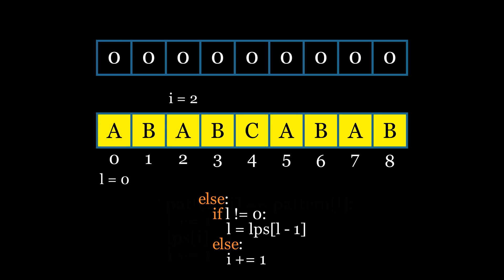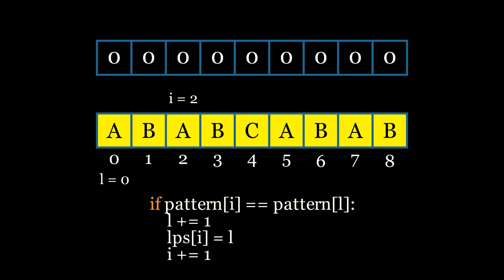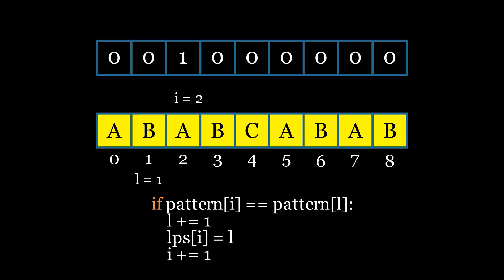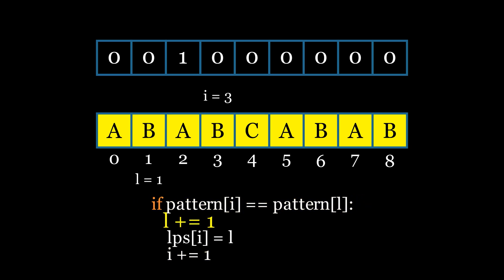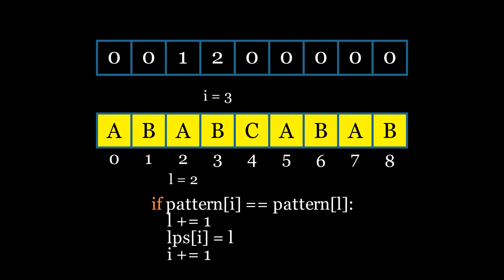If the characters match, we increment l by 1, set the element at index i in the LPS array to l, then increment i by 1. We continue the loop until i reaches the length of the pattern.